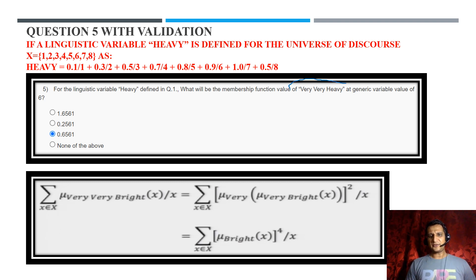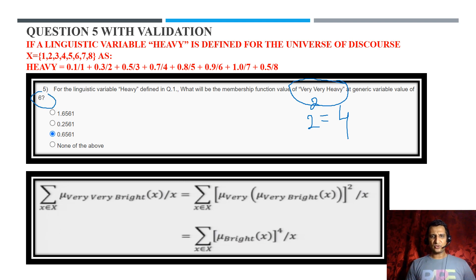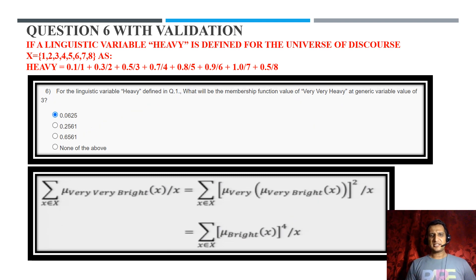Question 5: what is the membership value for 'very very heavy'? Since 'very' is used twice, 2 raised to the power 2 = 4, so we multiply the membership value four times. The question asks for generic variable 6. Element 6 has membership value 0.9, and 0.9 × 0.9 × 0.9 × 0.9 = 0.6561, so the correct answer is C.